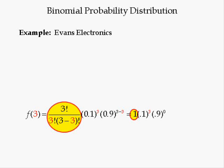different sequences providing three successes and zero failures. There's only one sequence for three successes and zero failures: success, success, success. That's why this red circle — the value of it equals 1.